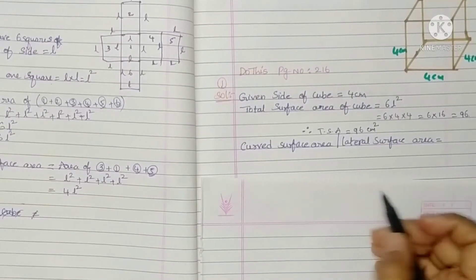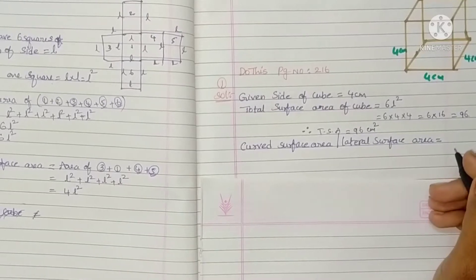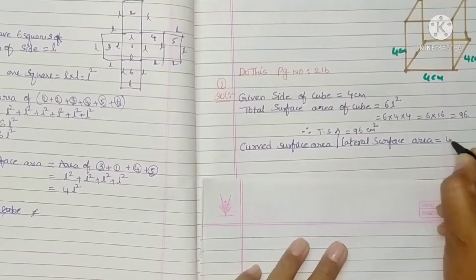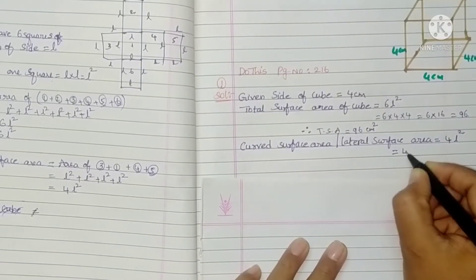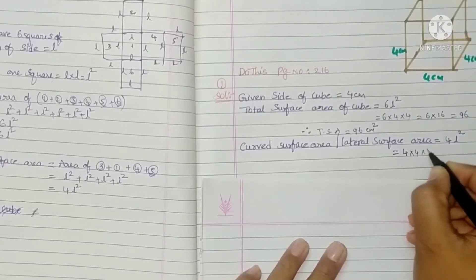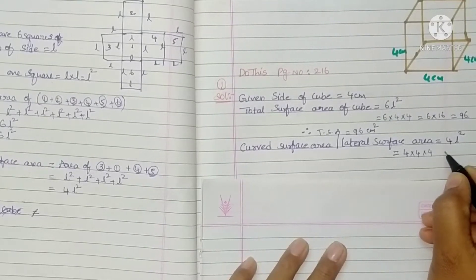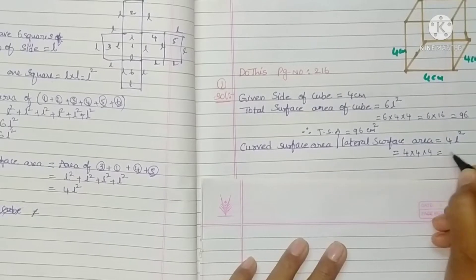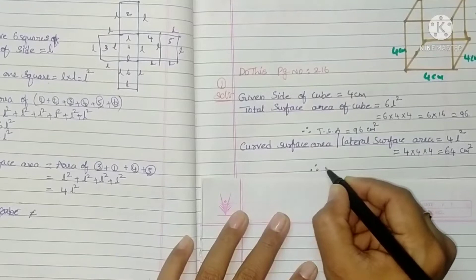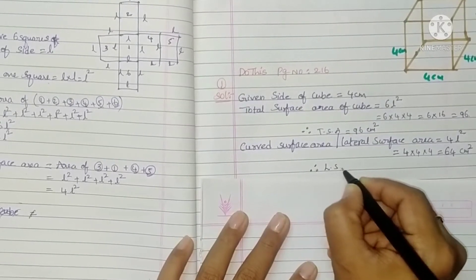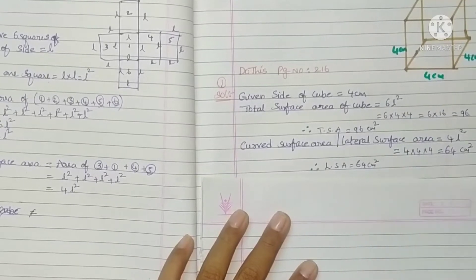Now for the curved surface area, the formula is 4L². So 4 × 4 × 4 = 4 × 16 = 64 cm². Therefore, the lateral surface area is equal to 64 cm².